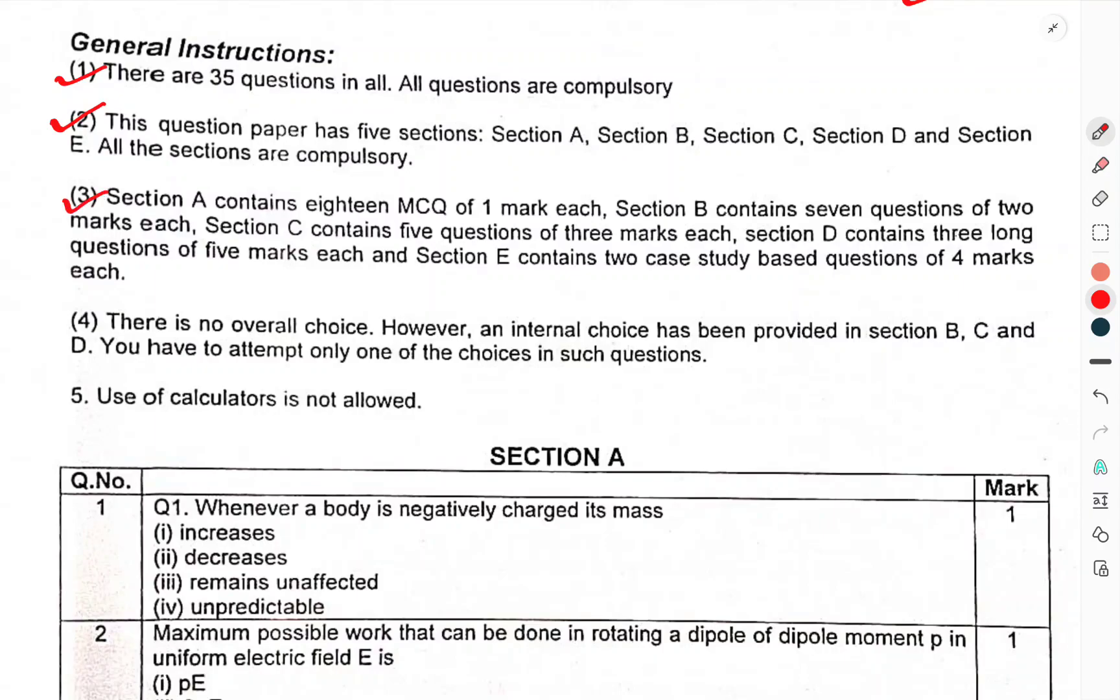All sections are compulsory. Section A contains 18 MCQ of 1 mark each, section B contains 7 questions of 2 marks each, section C contains 5 questions of 3 marks each, section D contains 3 long questions of 5 marks each, section E contains 2 case study-based questions of 4 marks each.